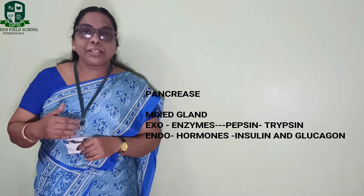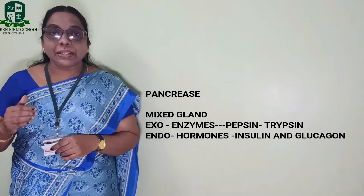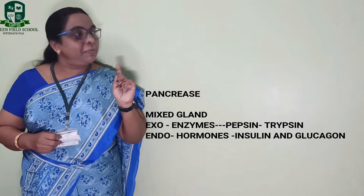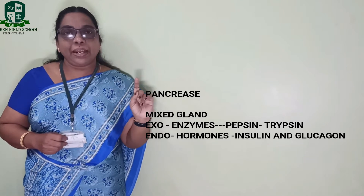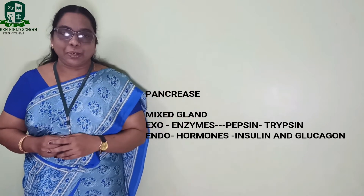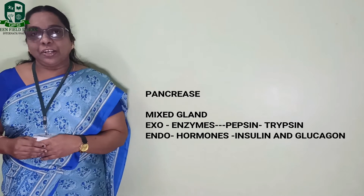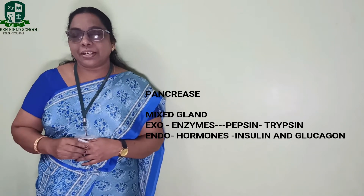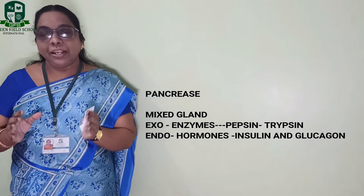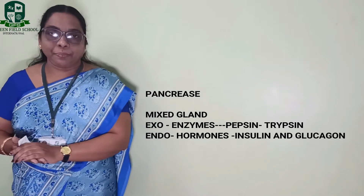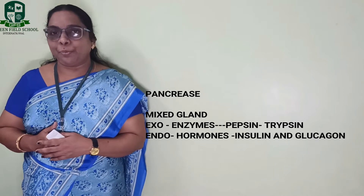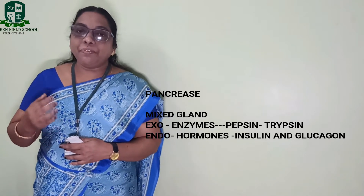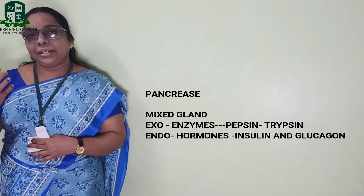The endocrine part of the pancreas releases hormones. The hormones are insulin and glucagon. These hormones are also helpful for the conversion of food particles into other forms. Usually when you take your diet and the food is digested, these hormones play a role in managing the energy derived from that food.